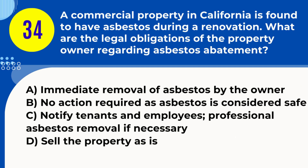Question 34. A commercial property in California is found to have asbestos during a renovation. What are the legal obligations of the property owner regarding asbestos abatement? A. Immediate removal of asbestos by the owner. B. No action required as asbestos is considered safe. C. Notify tenants and employees; professional asbestos removal if necessary. D. Sell the property as is. Answer: C. Notify tenants and employees; professional asbestos removal if necessary. Explanation: Property owners in California must notify tenants and employees if asbestos is found and undertake professional abatement if required, especially during renovations.